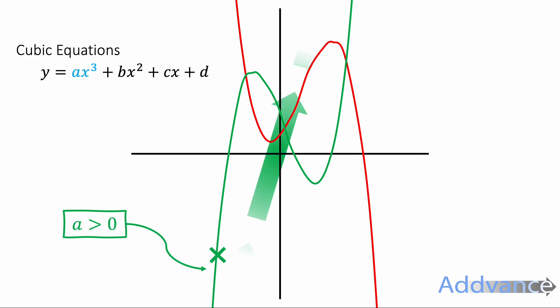Here, the green curve is going from bottom left to top right. It's going in that direction. It's going up. And that's because the number in front of the x³, the a, is positive. It's more than zero. Whereas the red curve is going from top left to bottom right. And so the a is negative here. And so it's going downwards.